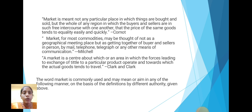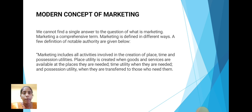The word market is commonly used in many ways. On the basis of the definitions given above by different authorities, we turn to the modern concept of marketing. We cannot find a single answer to the question of what is marketing. Marketing is a comprehensive term and is defined in different ways. Marketing includes all activities involved in the creation of place, time, and possession utility. Place utility is created when goods and services are available at a place where they are needed. Time utility is created when they are needed at the right time, and possession utility when they are transferred to those who need them.